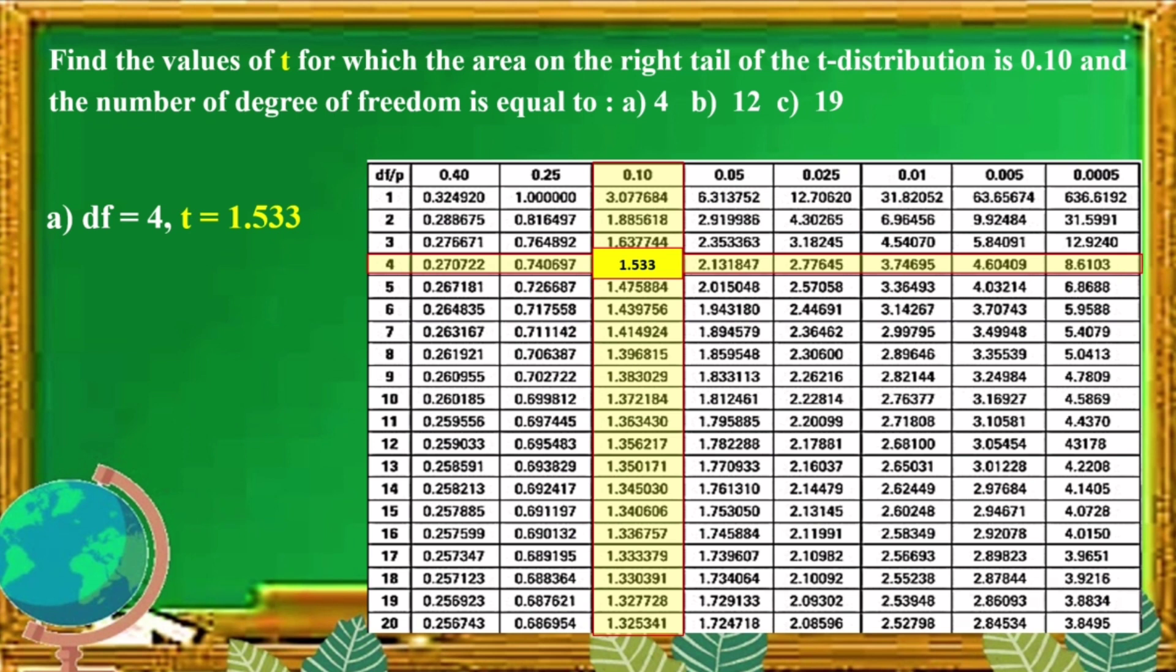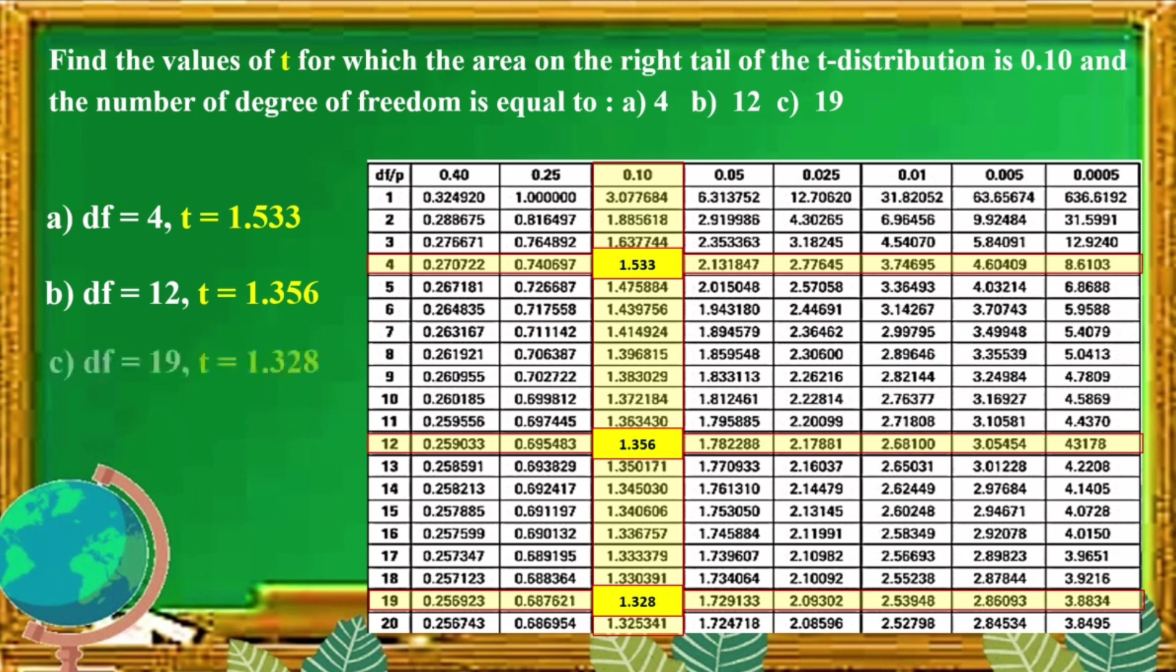For the second one, the degree of freedom is 12. And the T value is 1.356217 or round off, it becomes 1.356. For letter C, the degree of freedom is 19. So, the T value is 1.327728 or round off, it becomes 1.328. So, that's it.